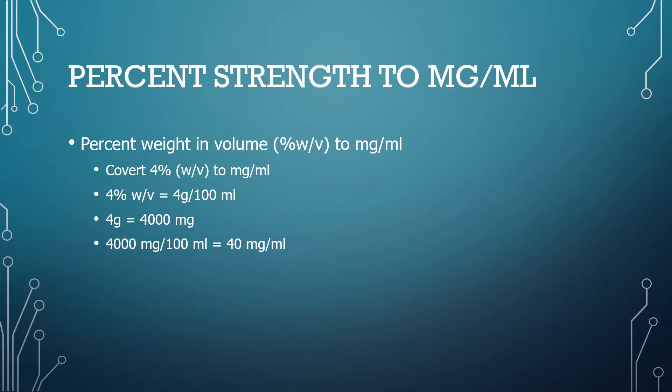So how do you convert four grams to milligrams? Well, you know one gram equals one thousand milligrams, so that means four grams is equal to four thousand milligrams. Now you'll have four thousand milligrams over one hundred mL, and when you divide them your final answer will be 40 milligrams per mL. These conversions will be very important — you'll come across them often when solving pharmaceutical calculation problems.